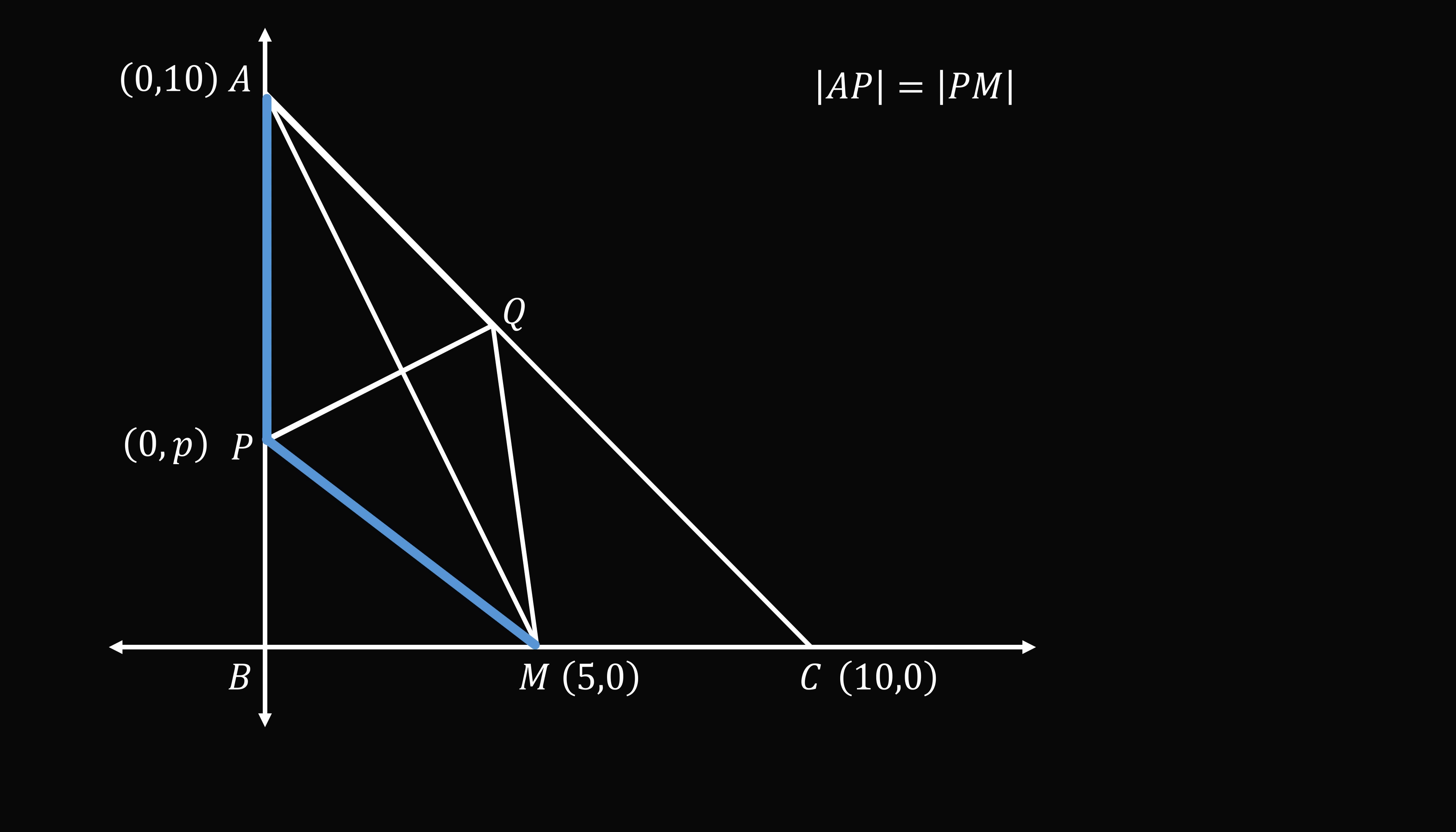Now, the length of AP is equal to 10 minus P. The length of PM we can figure out using the distance formula. We take the square root of the square of the difference in x coordinates plus the square of the difference of the y coordinates. So we have the square root of the square of 0 minus 5 plus the square of P minus 0. We just simplify this now. We can square both sides. Then we can square the binomial on the left. We cancel out the P squared terms. We put the constant terms on one side and the P on the other side. So we have 20P is equal to 75. And that gives us P is equal to 15 over 4. And almost like magic, we figure out the coordinates of point P.